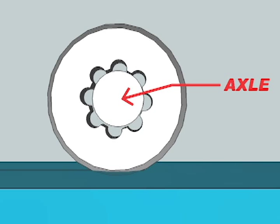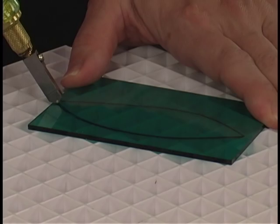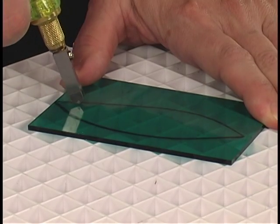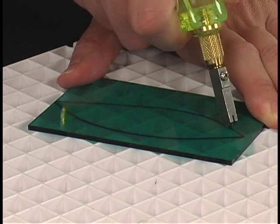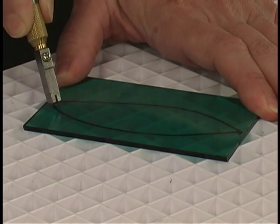You will notice a slight vibration as you score the glass. You may also notice a sound much like a zipper as the cutter makes its score. This is the tap technology working for you.